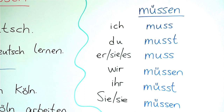Let's repeat this again. Ich muss. Du musst. Er muss, sie muss, es muss. Wir müssen. Ihr müsst. Sie müssen.